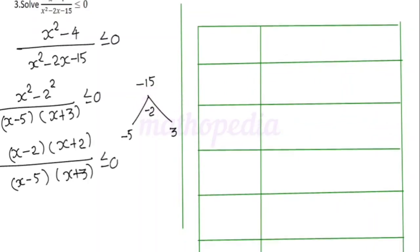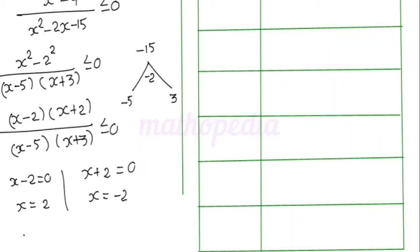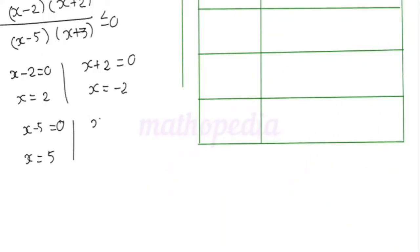Now equate each factor to 0. x - 2 = 0 gives x = 2. x + 2 = 0 gives x = -2. x - 5 = 0 gives x = 5. x + 3 = 0 gives x = -3.